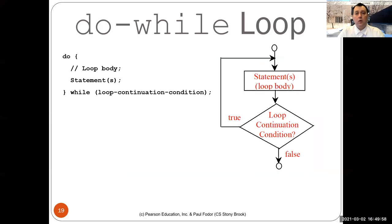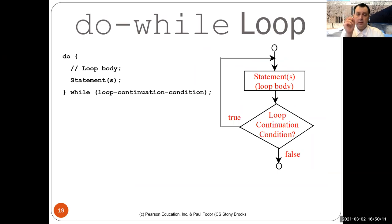Last time we talked about while loops. While loops have the same syntax as if statements, only the keyword is 'while' instead of 'if', and their semantics are that you iterate through the while loop while the condition is true. Another type of loop in Java is the do-while loop, which has the condition at the end of the loop body — so you execute the loop body at least once before testing the condition.